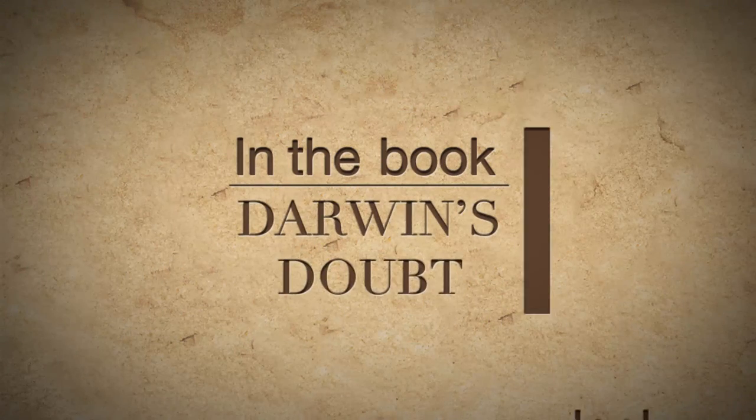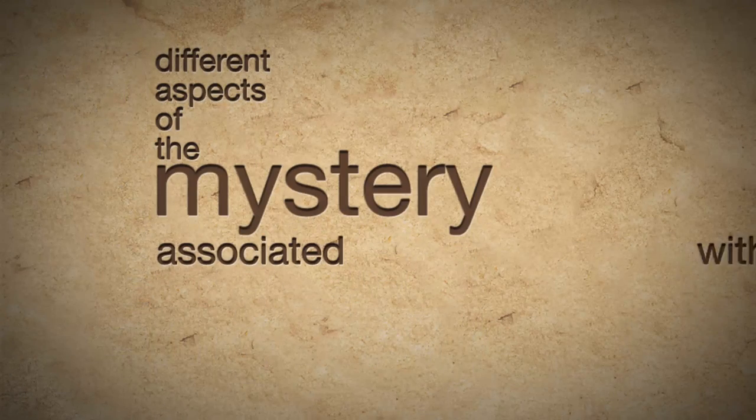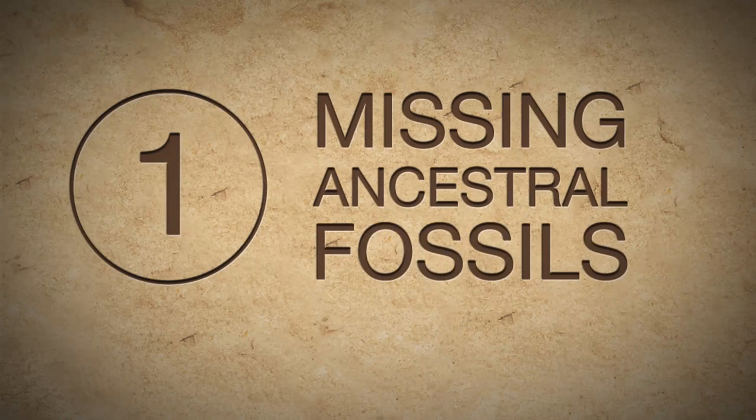In the book Darwin's Doubt, I look at two different aspects of the mystery associated with the Cambrian explosion. The first is the obvious mystery of the missing ancestral fossils. The Cambrian animals come suddenly into the fossil record and in the strata beneath them, we don't find anything remotely like most of these Cambrian animals that would provide a clear set of ancestral precursors or transitional intermediates as Darwin's theory would expect.